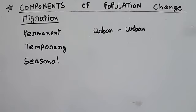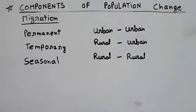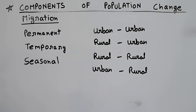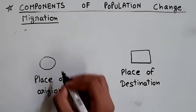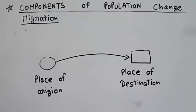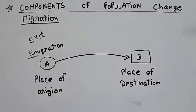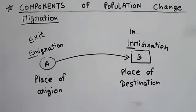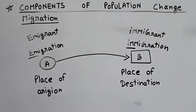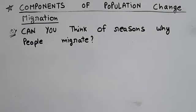There are four migration patterns: urban-to-urban (e.g., transfer from Delhi to Mumbai), rural-to-urban (people leaving villages for cities), rural-to-rural (moving from one village to another), and urban-to-rural (moving from cities to villages). When you leave your place of origin, you are an emigrant (E for exit); when you enter the place of destination, you are an immigrant (I for in).